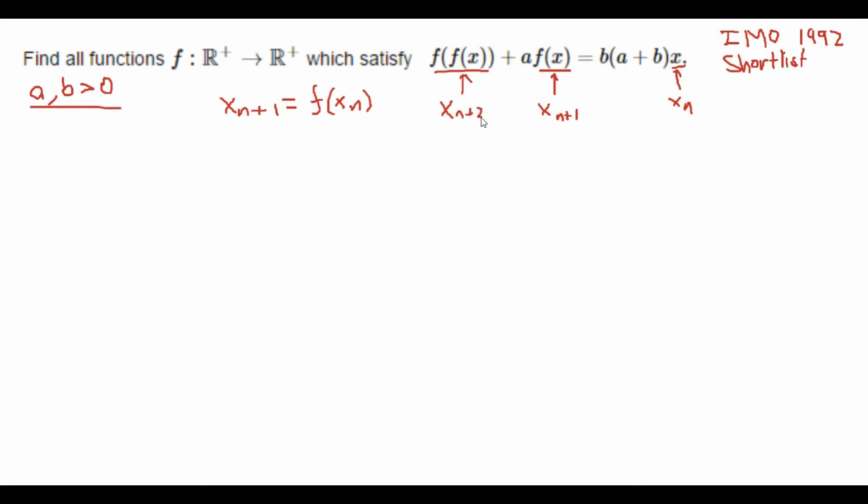Anyways, this makes the equation turn into x_{n+2} + a*x_{n+1}, and I'll bring this thing over on the other side, minus b(a+b)*x_n equals 0. Sorry for the bad handwriting.